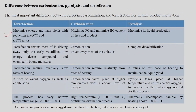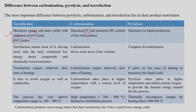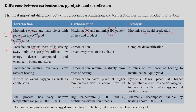Torrefaction maximizes the energy and mass yield with reduction in the O/C and H/C ratios — that is, the oxygen-to-carbon and hydrogen-to-carbon ratios. In case of carbonization, the process maximizes the fixed carbon content and minimizes the hydrocarbon content of the solid product. Pyrolysis maximizes liquid production to produce bio-oil. Another important difference: torrefaction retains most of the volatiles, driving away only the early-volatilized, low-energy-dense compounds and chemically bound moisture, whereas carbonization drives away most of the volatiles present in the biomass.